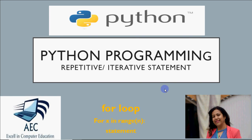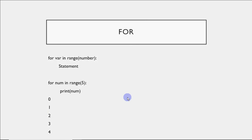Hi all, this is Anjali and in this video we'll be doing how to use for loop in Python. Every programming language has certain statements which are called repetitive or iterative statements. The purpose of these statements is to repeat the same code again and again. If you have a set of statements which you want executed a number of times, you need a repetitive or iterative statement. In Python you have two statements for this: for and while. We'll be working with the for loop first.